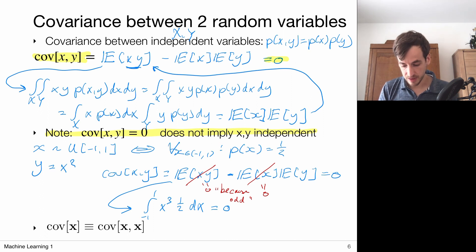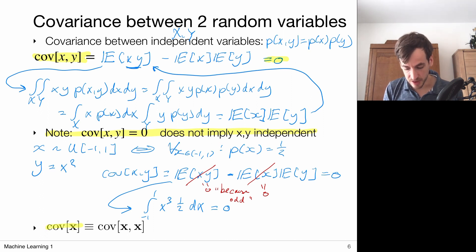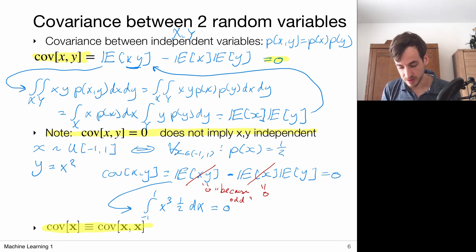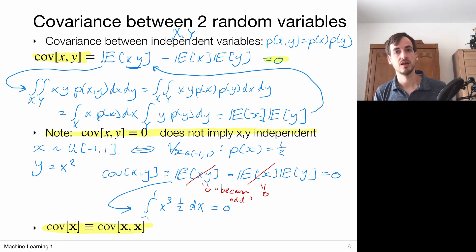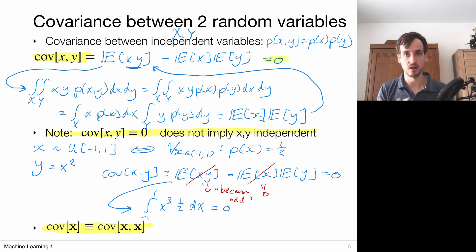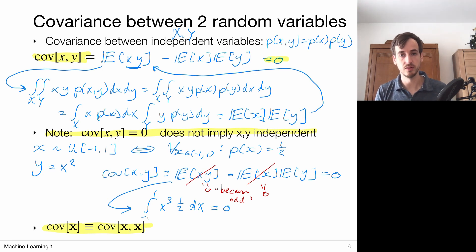Finally, you may encounter the notation 'covariance of X', which is implicitly understood to be the covariance between X and itself, since covariance is always a measure between two random variables.